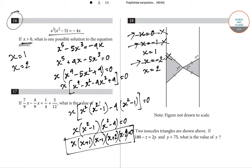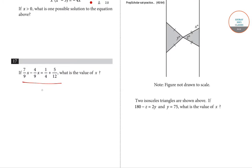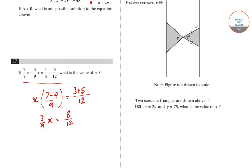Now we will solve question number 17. If 7 by 9 x minus 4 by 9 x equals 1 by 4 plus 5 by 12, what is the value of x? Taking x common on the left: (7 minus 4) divided by 9 into x, which is 3 by 9 x, equals to 8 by 12 (since LCM of 4 and 12 is 12, giving 3 plus 5 equals 8). So 1 by 3 x equals 2 by 3, and cancelling the denominators gives x equals 2.